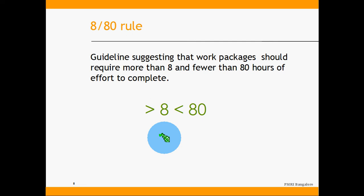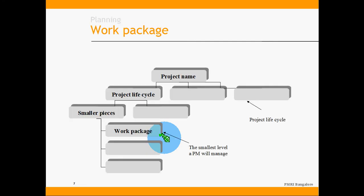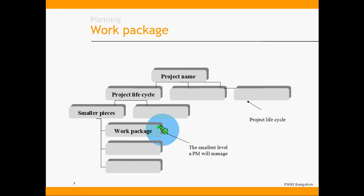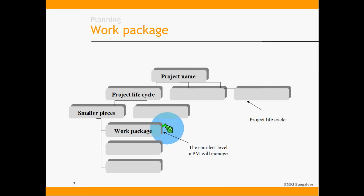Whenever you do a WBS, you will be in a dilemma about to what extent to decompose work packages. If you decompose to the most granular level, the lowest level can become activities, which is an overkill. PMI has given a guideline — a global best practice — that when you decompose a project into a WBS, work packages should be between 8 hours and 80 hours of work. For a very small project, work packages might be around 8 to 12 hours; for a very large project, they could be 70 to 80 hours.